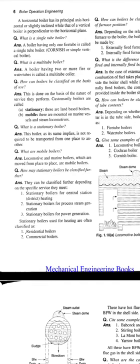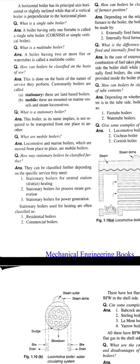How may stationary boilers be classified further? They can be classified further depending on the specific service they perform: stationary boilers for central station and district heating, stationary boilers for process steam generation, stationary boilers for power generation. Stationary boilers used for heating are often classified as residential boilers or commercial boilers.